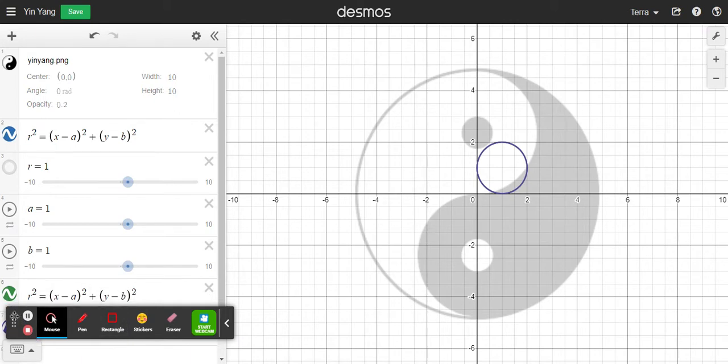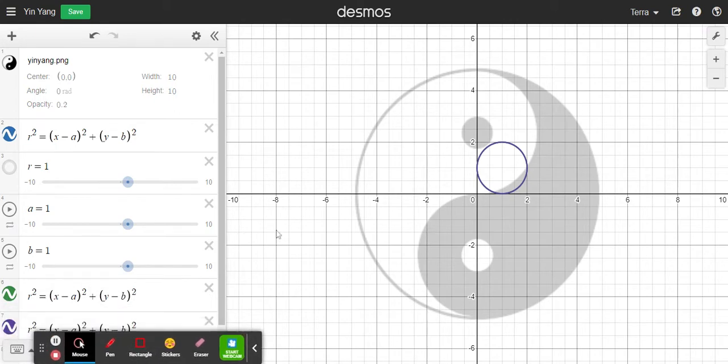You can see I have a circle over here on my graph and the sliders are going to enable me to move this circle left and right, which is my X, and remember up here X it said X minus a.